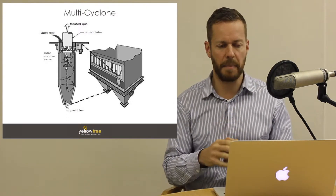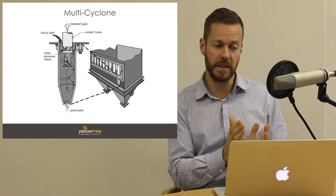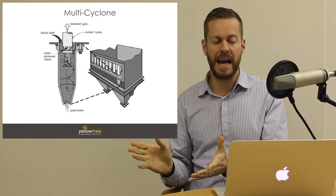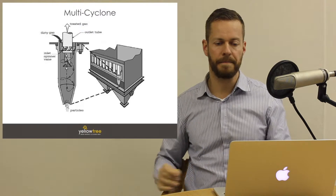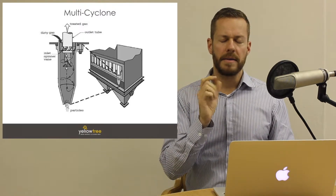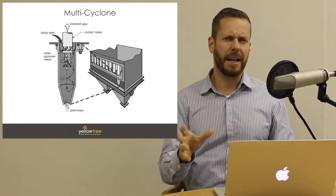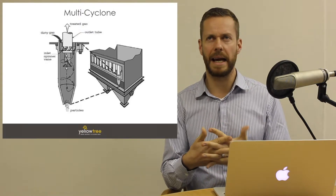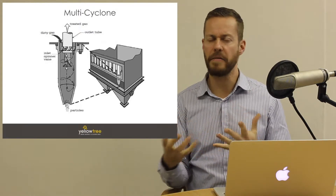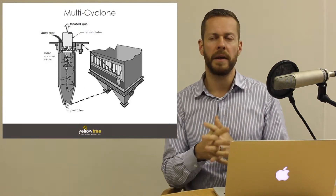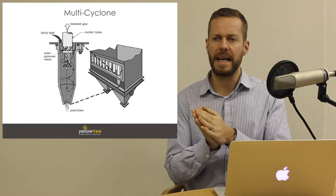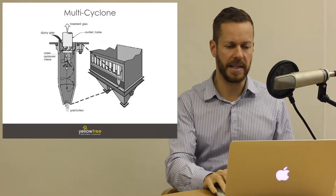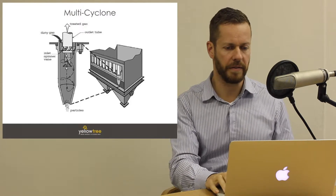What we see here is a schematic of an individual cyclone, and then many cyclones housed inside a square body. Multicyclones with a square body like this are typically older generation, manufactured before 1994. After that, multicyclones were housed in a circular body, as seen in the photograph shown here.